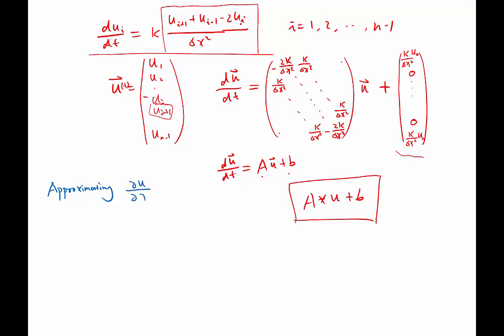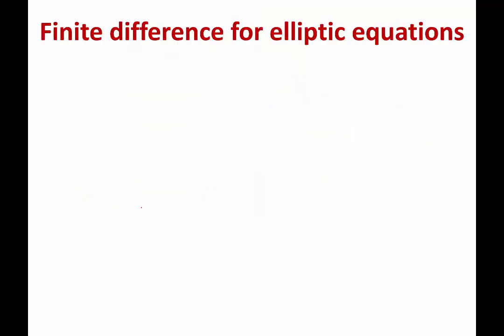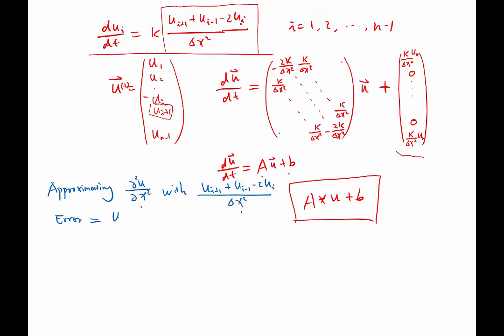Approximating second-order derivative with finite difference. So the approximation error we define is basically this minus this. The approximation error is u_{i+1} plus u_{i-1} minus 2u_i divided by delta x square minus this.